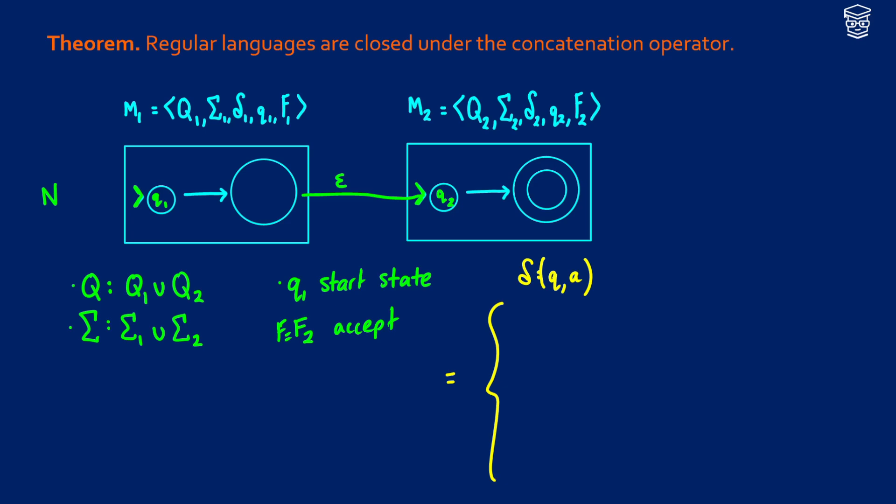So here's the first thing. If I'm in machine 2, so let's say that we're taking a state that comes from machine 2, so Q is from Q2, then I just want to use the regular transition function that exists in that machine. So if we're in the second machine, I'm going to use the second machine's transition function.